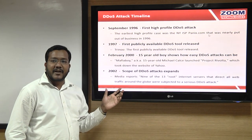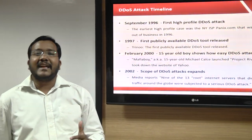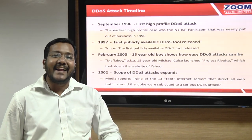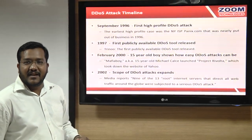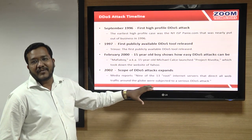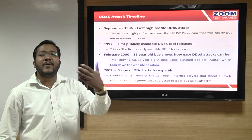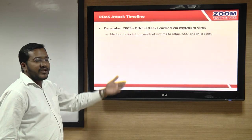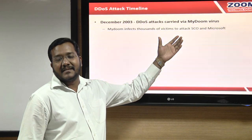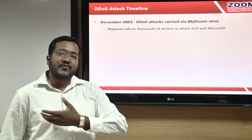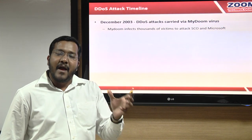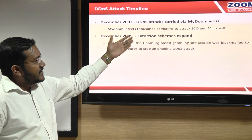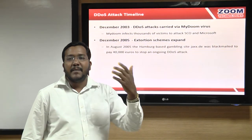In 2002, distributed DoS attacks moved to the next level, targeting DNS servers — specifically the 13 root DNS servers. Nine of those root DNS servers came under severe attack, causing very slow internet response. Later, DDoS attacks were combined with viruses. The MyDoom virus infected many computers, and on a planned date and time, every infected machine targeted Microsoft and SCO servers.